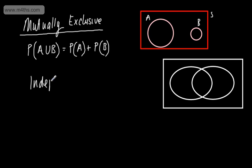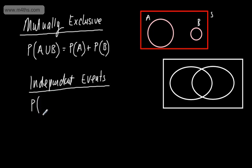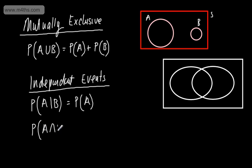Let's now look at independent events. If we have independent events, the probability of one event happening won't influence the probability of the next. An example might be flipping a coin — the outcome of the first coin won't affect the outcome of the second. Compare that to eating chocolates from a box, where taking one out affects subsequent probabilities. For independent events, we can say the probability of A given B equals the probability of A, and the probability of A intersection B equals the probability of A multiplied by the probability of B.